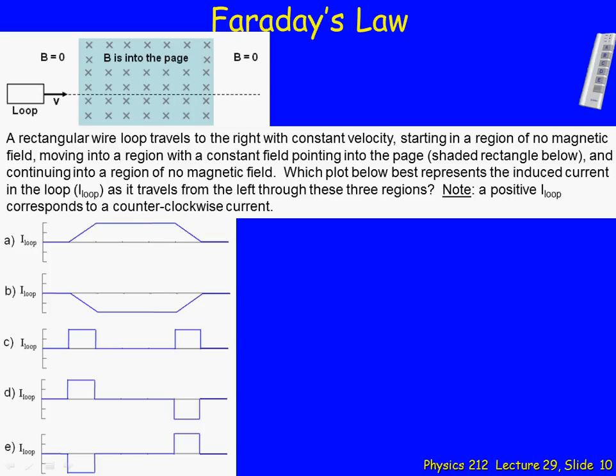Here we have a Faraday's Law question where we have a conducting loop on the left-hand side that's going to travel to the right with a uniform velocity to a region that has a uniform magnetic field. And we need to see which plot best represents the current through the loop.